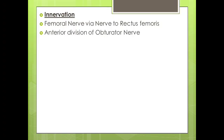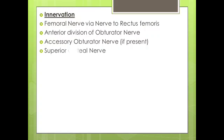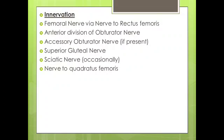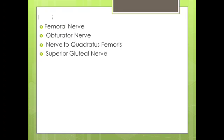Moving on to the innervation of the hip joint. The hip joint is innervated by many nerves: the femoral nerve via the nerve to rectus femoris, anterior division of obturator nerve, accessory obturator nerve if present, superior gluteal nerve, sciatic nerve occasionally, and a nerve to quadratus femoris.